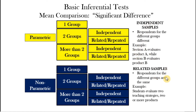The two samples are related when the same set of students evaluates two teaching strategies. For example, a teacher uses a traditional teaching strategy for the first week, and for the same set of students uses another strategy in the second week. We are comparing performance under two different strategies, so we still have two groups — however, those two groups are considered related because the people in each group are the same.